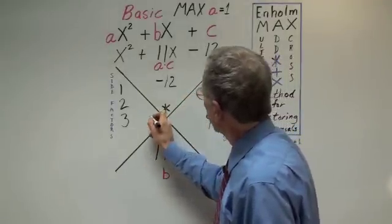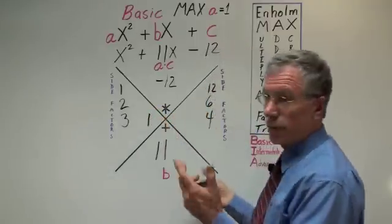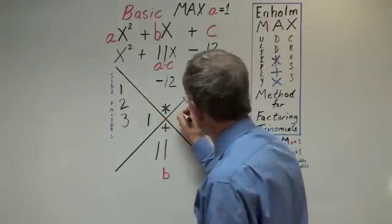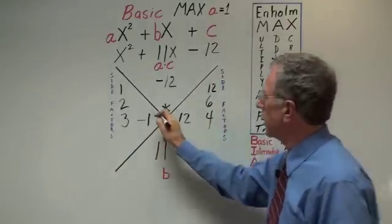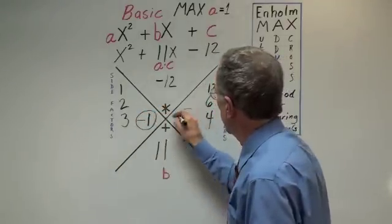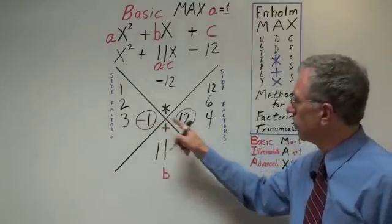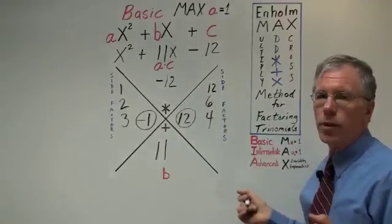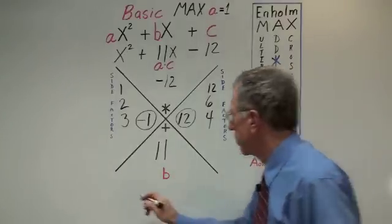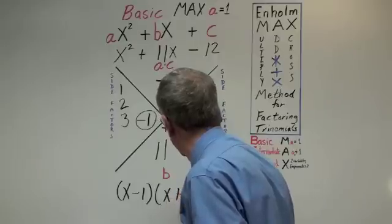So what would happen here is we have 1 minus 12 will give us actually negative 11. We want positive 11. So we know that we need negative 1 here and 12 here to assure that we get 11. And, of course, negative 1 times 12 gives us negative 12. The framework's all set. We're ready to write our answer down. x minus 1 times x plus 12.